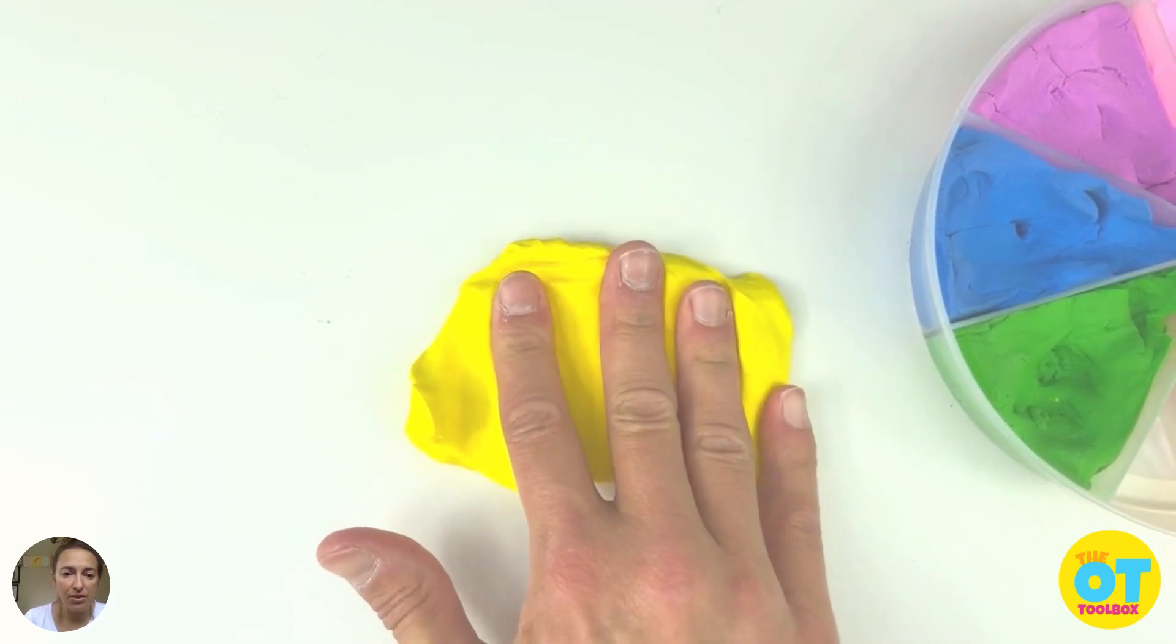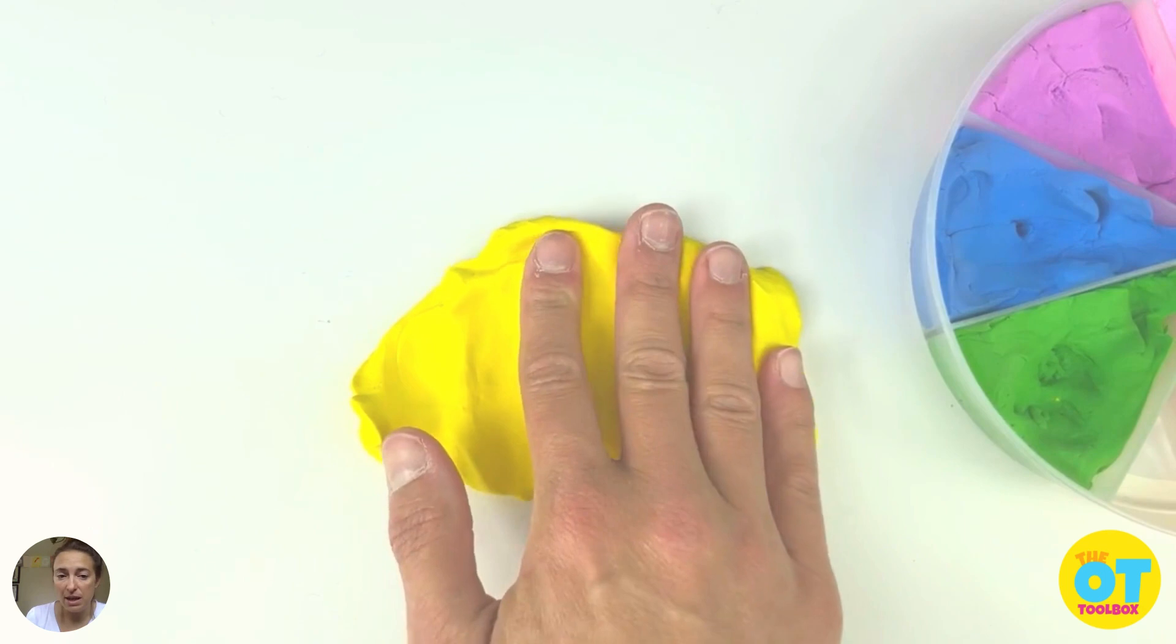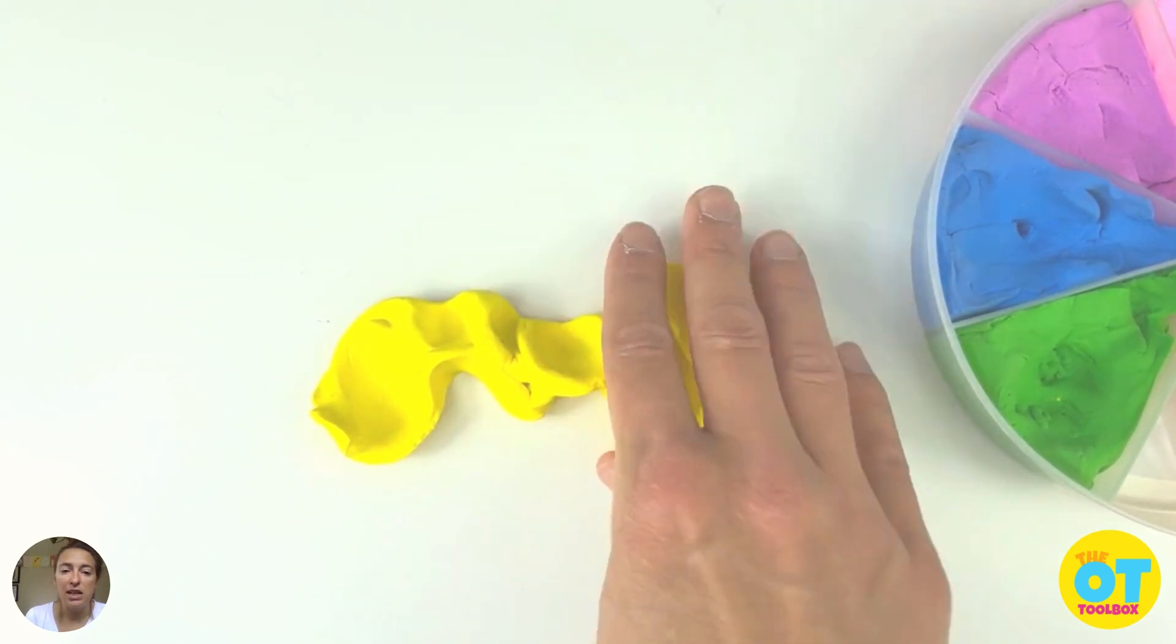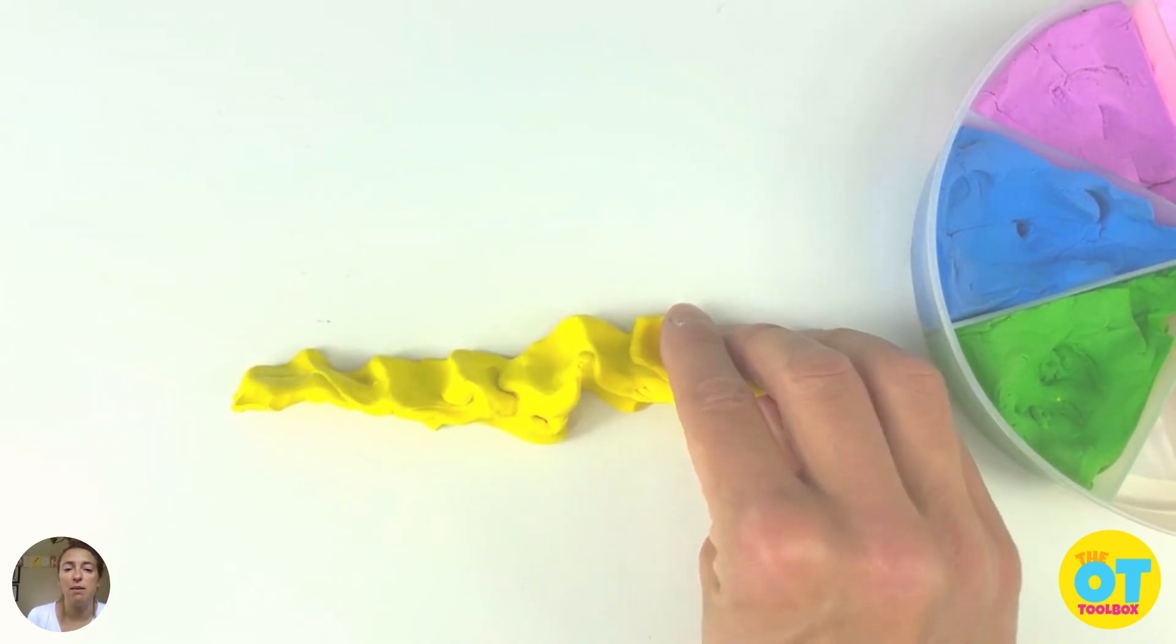Next, we're pressing it down on the table and spreading those fingers apart. This is a great next step because you're pushing down onto the table and you're really getting aware of finger strength and how much pressure you need to press on that Play-Doh.